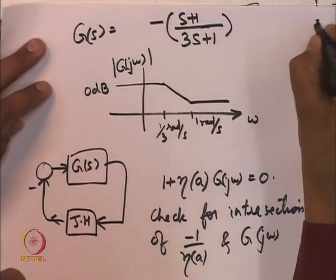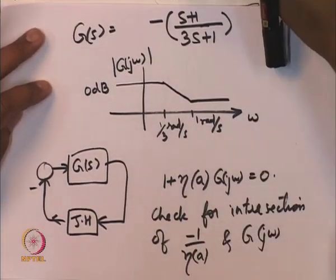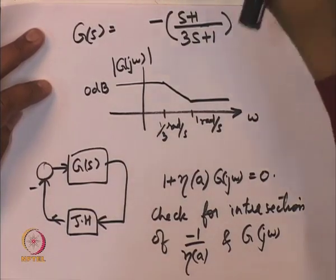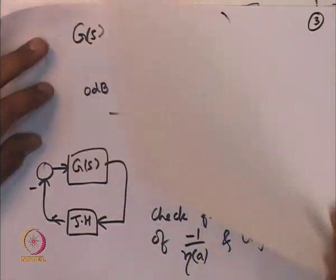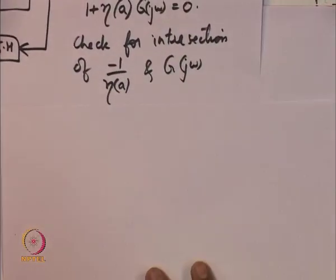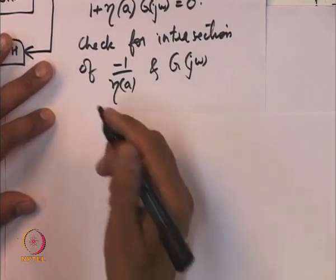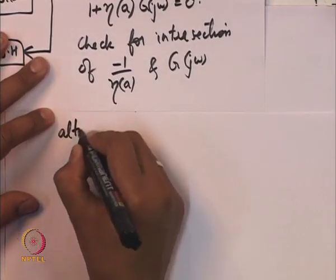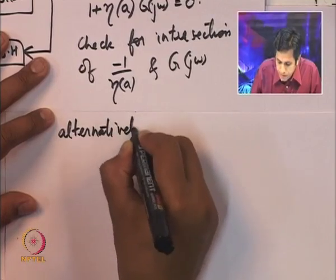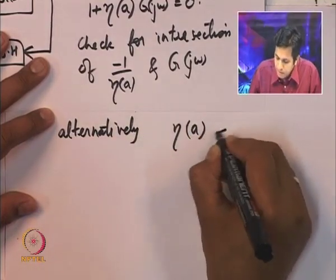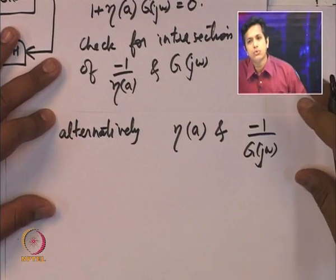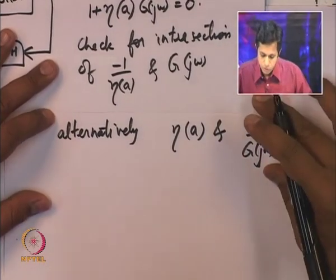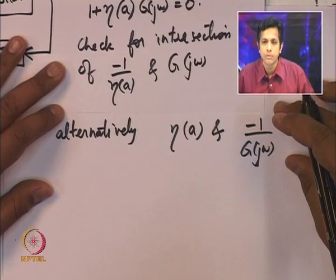If η were a function of omega also, then intersection alone is not enough — they also have to intersect for the same value of omega in both. Because of this particular separation in which A affects only η(A) and omega affects only G, one is able to plot them separately and look for the intersection. Plotting G in particular is easy because there is nothing but the Nyquist plot. Instead of plotting minus 1/η(A), why not plot the Nyquist plot of minus 1/G? This is exactly the same — there is no difference between the two procedures.